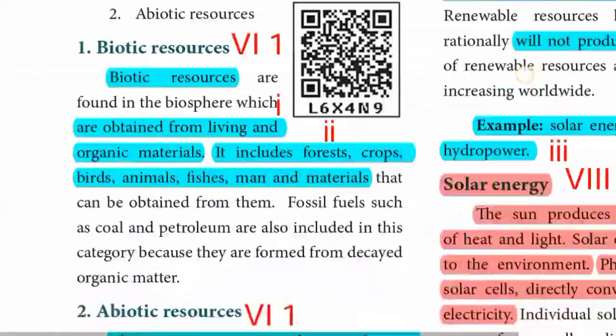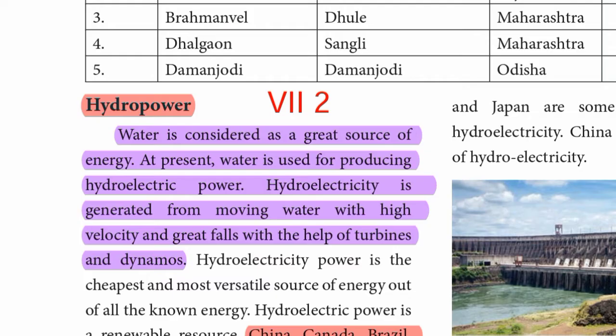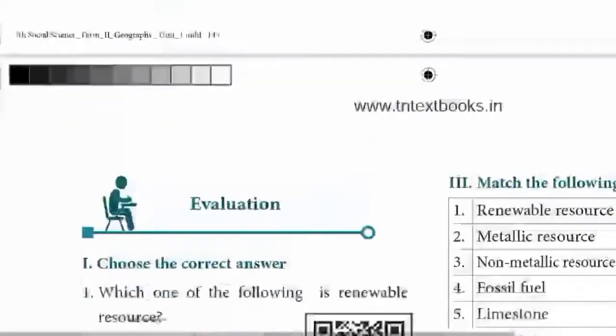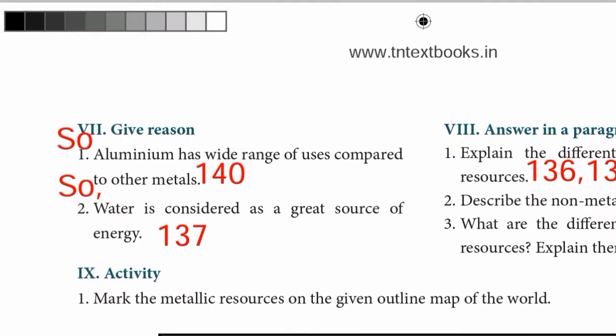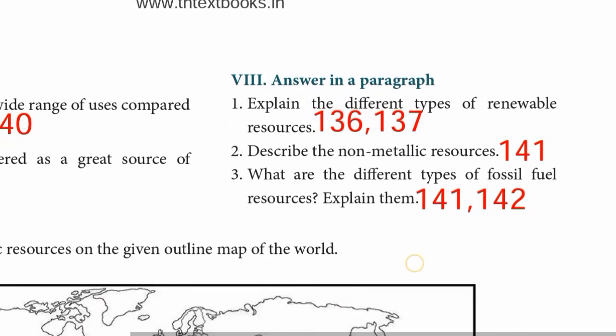From page 137, under the hydro power topic: water is considered as a great source of energy. At present, water is used for producing hydroelectric power. Hydroelectricity is generated from moving water with high velocity and great force with the help of turbines and dynamos. So water is considered as a great source of energy.